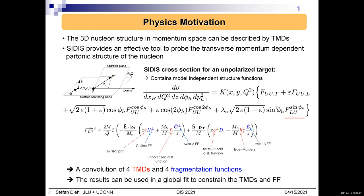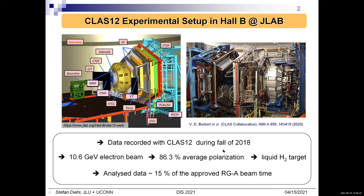The 3D nucleon structure in momentum space can be well described by TMDs, and semi-inclusive deep inelastic scattering provides an effective tool to probe the transverse momentum dependent partonic structure within the nucleon. Looking at the SIDIS cross-section for an unpolarized target, it depends on several model-independent structure functions F_{UU} and F_{LU} and on the angle φ between the electron scattering plane and the hadron production plane according to the Trento convention. The focus of this study is on the polarized F_{LU}^{\sin\phi} structure function, which can be expressed as a convolution of four TMDs and four fragmentation functions — each term containing either a twist-three TMD or twist-three fragmentation function, making it a twist-three property. The results can be used in global fits to further constrain these TMDs and fragmentation functions.